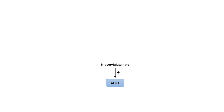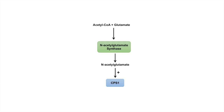You may be thinking, where is N-acetylglutamate actually coming from? It comes from acetyl-CoA and glutamate being added together by the enzyme N-acetylglutamate synthase. What regulates N-acetylglutamate synthase? Arginine, which is required in the urea cycle, is actually an activator of N-acetylglutamate synthase.